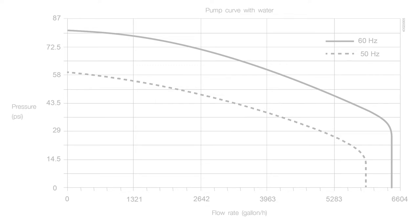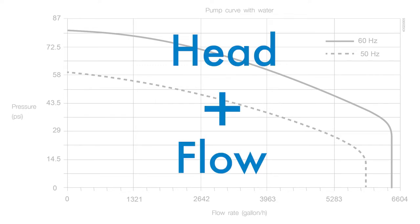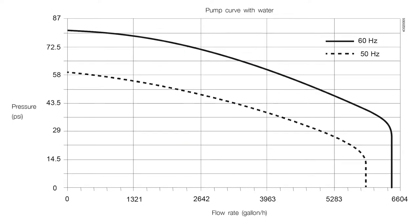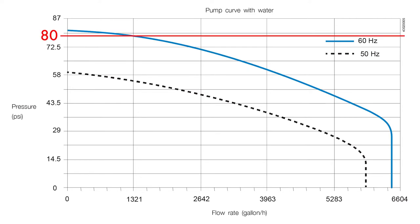Now let's put head and flow together. Let's say you want to know the flow rate to expect from a pump at 60 hertz when the pressure is 80 psi. In this example, the flow rate is 1,321 gallons per hour.